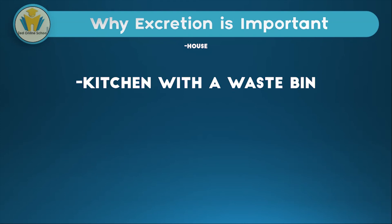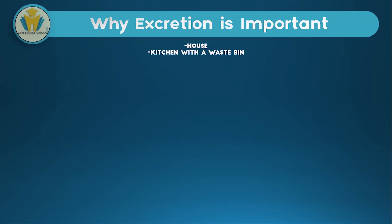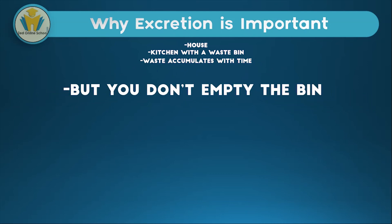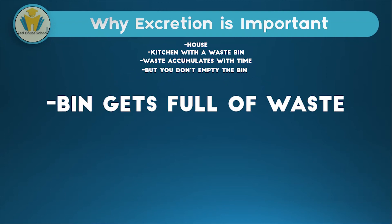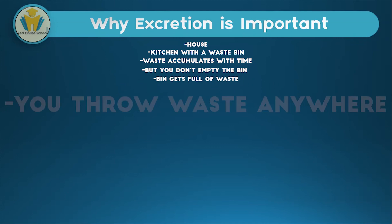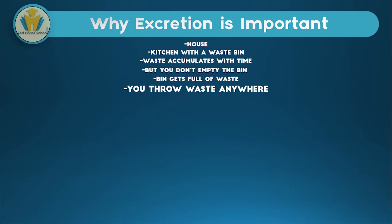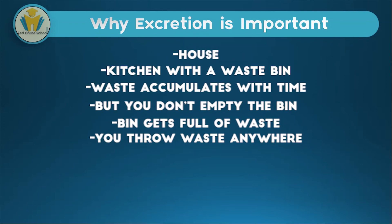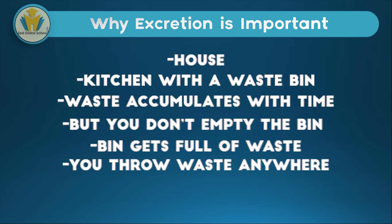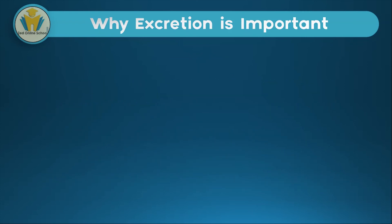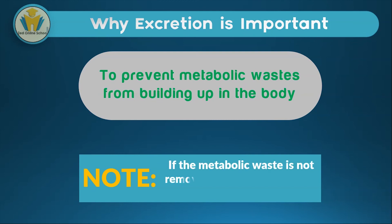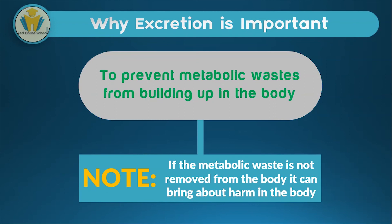Imagine you have a house with a kitchen where there's a bin in the corner. You usually throw waste paper in that bin, but over time the waste accumulates and the bin becomes full. Because the bin is full you have nowhere to throw your waste, so you start throwing it all over the place and the kitchen becomes dirty. That is the same with our bodies — excretion is like emptying the bin. The importance of excretion is to prevent metabolic waste from building up in the body, because if it is not removed it can build up and cause harm, even disease.